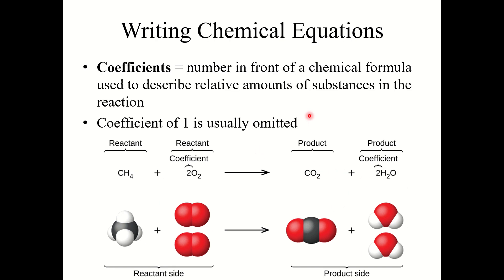When we are writing chemical equations, we've talked about these a little bit before, but coefficients — that number in front of a chemical formula — are used to describe the relative amount of substances in the reaction. If the coefficient is 1, it is typically omitted.